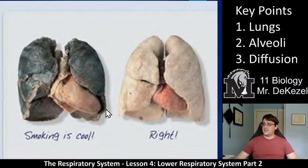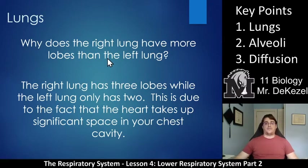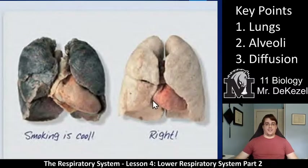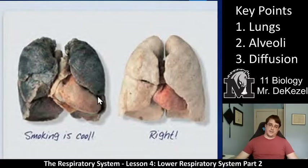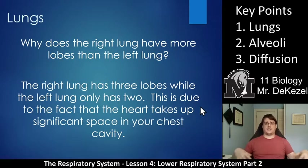We have two pictures: clean lungs and dirty lungs from smoking. You can also see how much larger the heart is and how much smaller the lungs are in the diseased version. The right lung has three lobes while the left lung only has two. The reason is that the heart takes up a significant amount of space in your chest, making the lungs asymmetrical — larger on the right and smaller on the left.